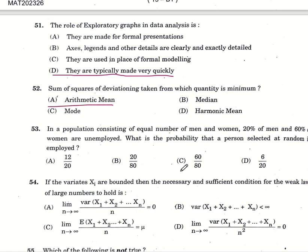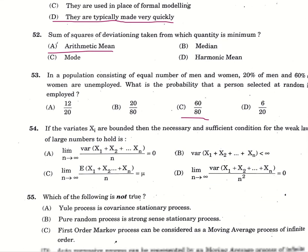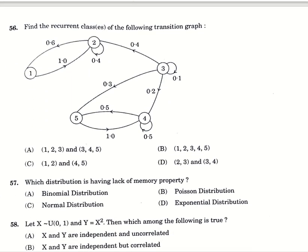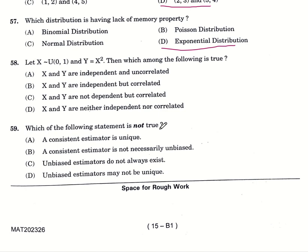Fifty-three, in a population consisting of equal number of men and women, 20% of men and 60% of women are unemployed. We have to find the probability that a person selected at random is employed, option C, 60 by 80. Fifty-four, if the variates are bounded, then necessary and sufficient condition for weak law of large numbers to hold is option number D. Fifty-five, which of the following is not true? Option number A, Yule process is covariance stationary process. Fifty-six, transition graph is given, we have to find the recurrent classes, option number D. Which distribution lacks memory property? Option number D, exponential distribution.